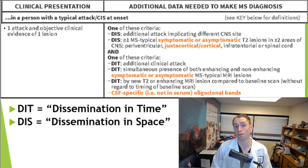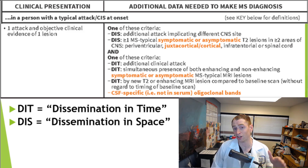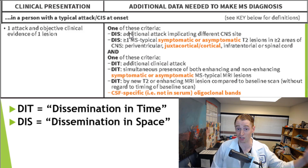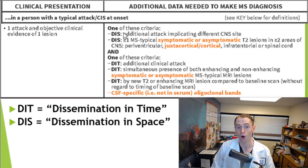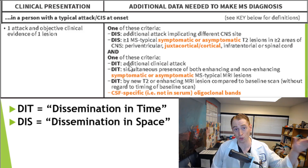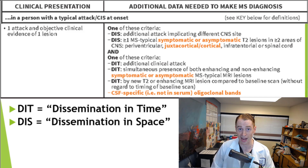It's also possible to be diagnosed with MS after having only one attack with only one clinical lesion. Such an individual would meet neither the criteria for dissemination in time nor space and would need to fulfill both. This slide summarizes everything: for dissemination in space, either an additional attack or multiple lesions in different areas of the nervous system. For dissemination in time, an additional attack, both an active and non-active lesion on MRI, a future MRI with a new lesion, or a positive spinal tap.